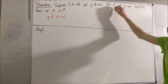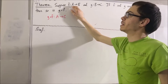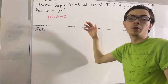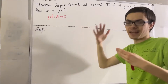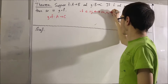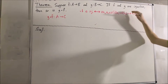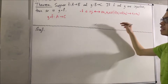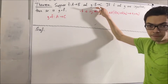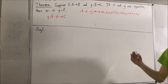To say that f is injective means that for every two elements a1 and a2 in A, if f of a1 equals f of a2, then a1 equals a2. And to say that g is injective means that for every two elements b1 and b2 in B, if g of b1 equals g of b2, then b1 equals b2.